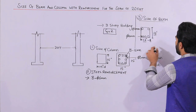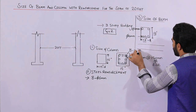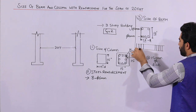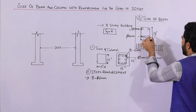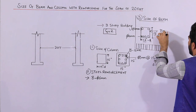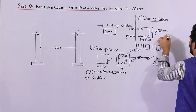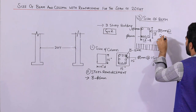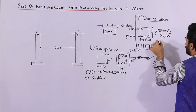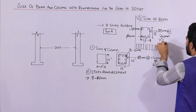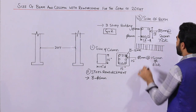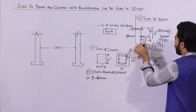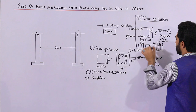For the stirrup spacing in the beam: the stirrup diameter should be 8 mm with a spacing of 200 mm, or about 7 inches center to center. This applies at the distance of L/4 on both sides where we have negative bending moment. At the middle span you can increase the spacing.